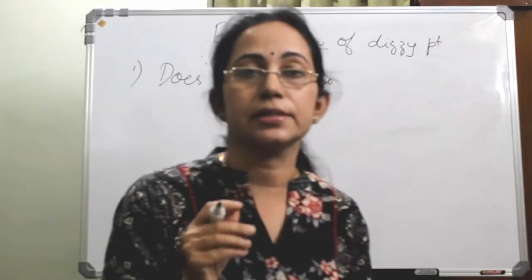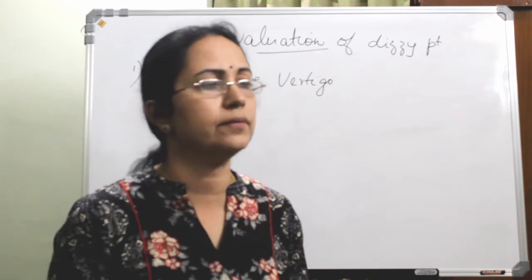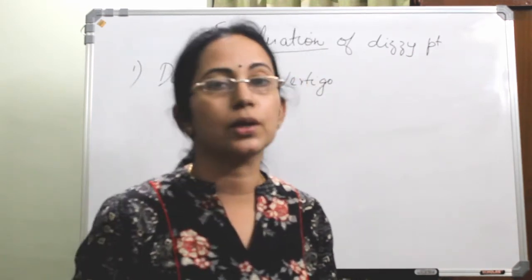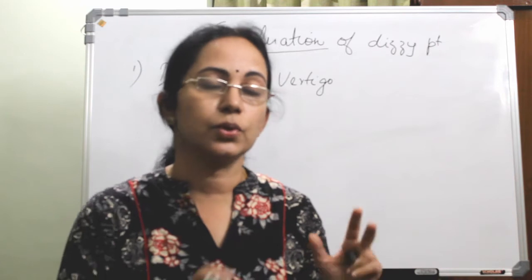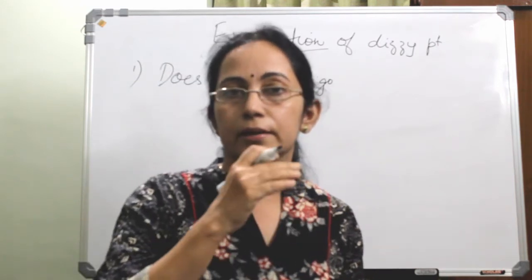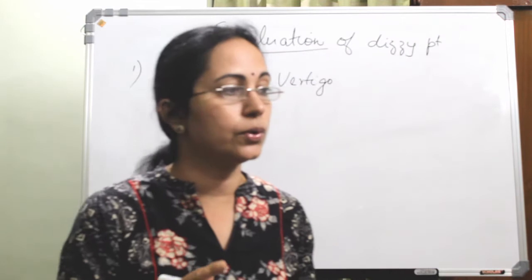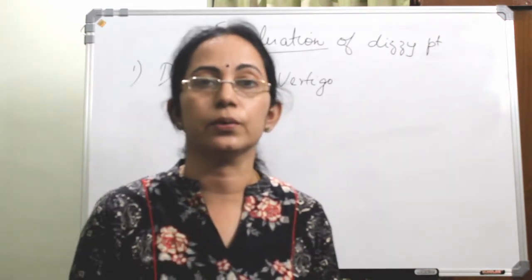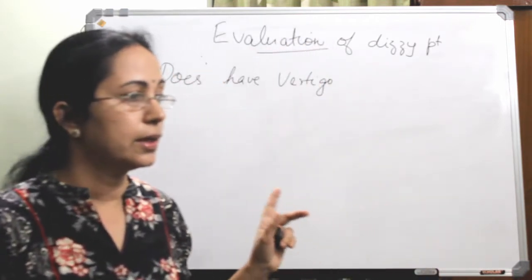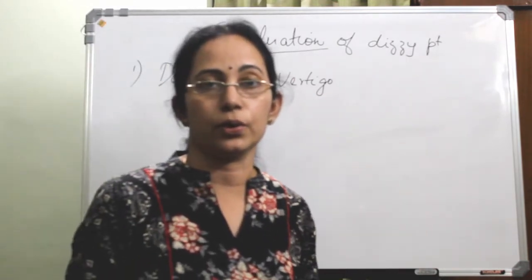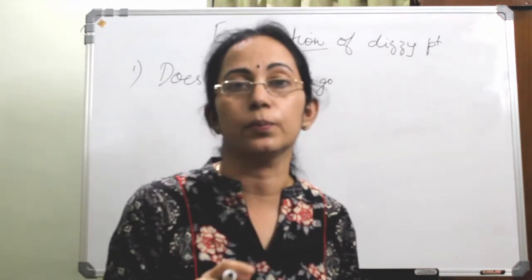That means, is the patient having a true vertigo? Other than true vertigo, it can be an oscillopsia, or it can be a disequilibrium, or it can be an unsteadiness, it can be a lightheadedness or a presyncope. All these are described in my class on examination of the ear. So if any doubt on terminologies like oscillopsia and true vertigo, go back to that class. So one thing is whether the patient is having a true vertigo or not — oscillopsia, disequilibrium, unsteadiness, lightheadedness, and presyncope should be ruled out.